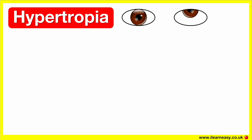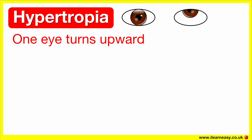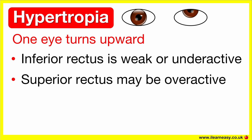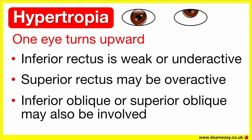Hypertropia is when one eye turns upwards, so one eye is higher than the other. It can cause vertical double vision or eye strain, and it may result from muscle imbalance or nerve issues. A hypertropia can occur when the inferior rectus, which pulls the eye downwards, is weak or underactive, or if the superior rectus, which pulls the eye upwards, is overactive. The inferior oblique or superior oblique may also be involved, and as a result, the eye drifts upwards.